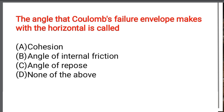Next question: The angle that Coulomb's failure envelope makes with the horizontal is called — Option A: Cohesion. Option B: Angle of internal friction. Option C: Angle of repose. Option D: None of the above. The correct answer is Option A: Cohesion.